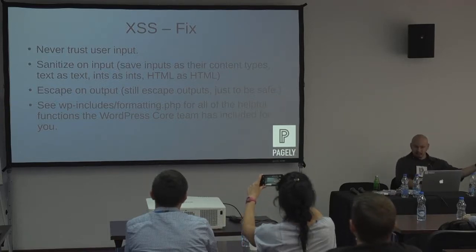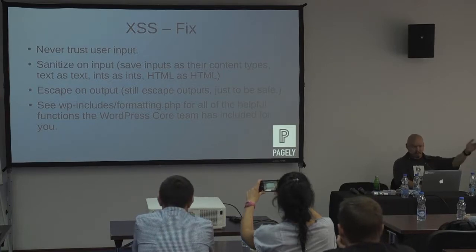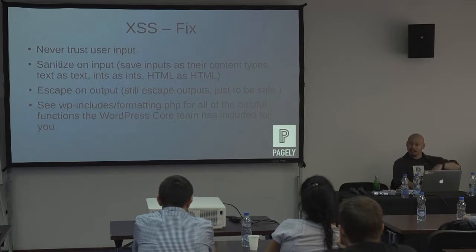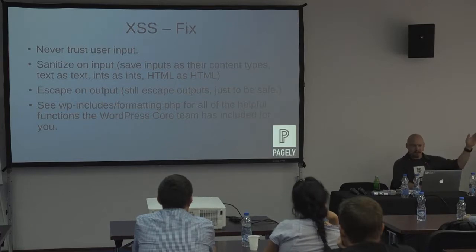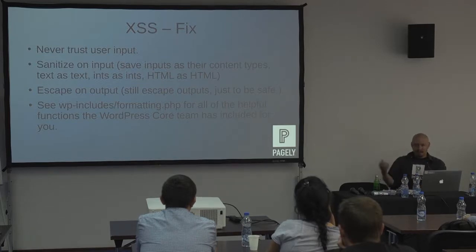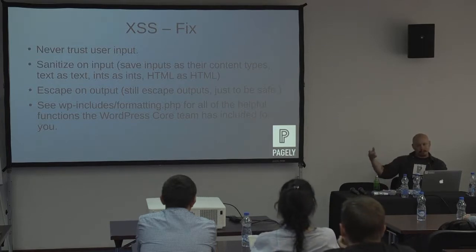Objects present a very similar problem. With object and serialized injections, you expected a certain type of object. You can now, in PHP 7 and higher, validate the object class you want. With cross-site scripting, if you expected somebody's name, nobody's name is going to be a JavaScript tag.